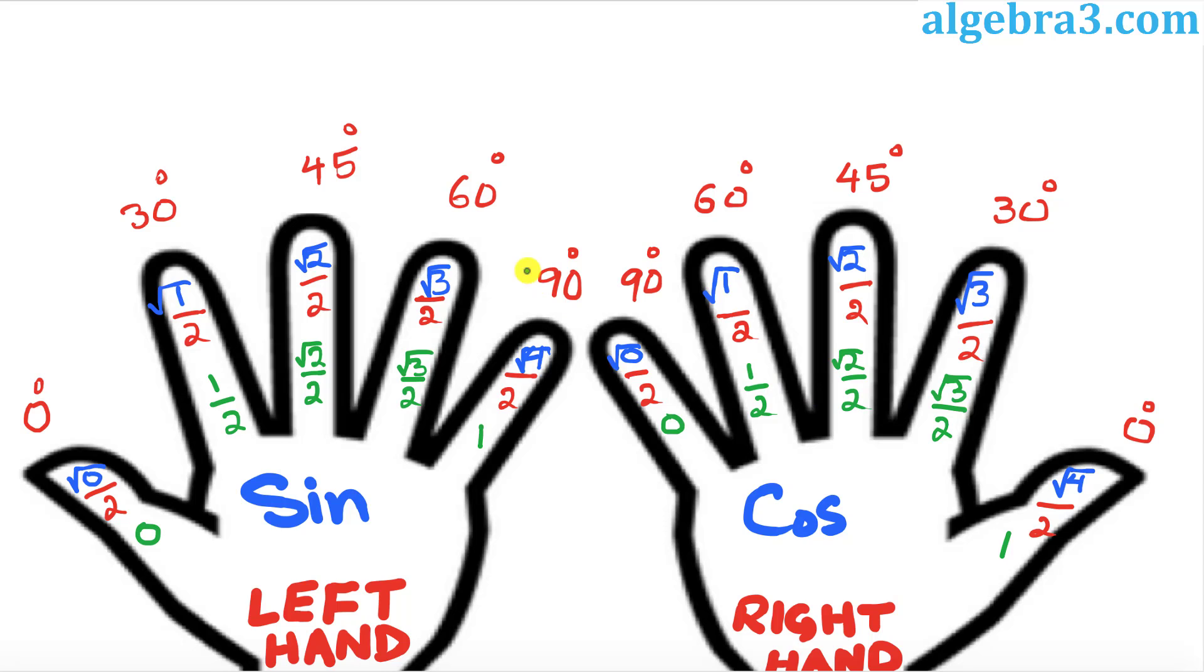Now, by just looking at this, if someone asks you to find sine of 45 degrees, you look at sine on the left hand side. Sine of 45 is going to be square root of 2 over 2. Likewise, if somebody says find cosine of 60 degrees, that's going to be 1 over 2.